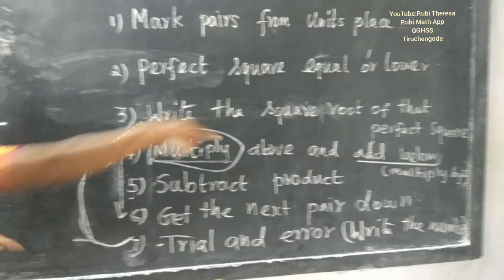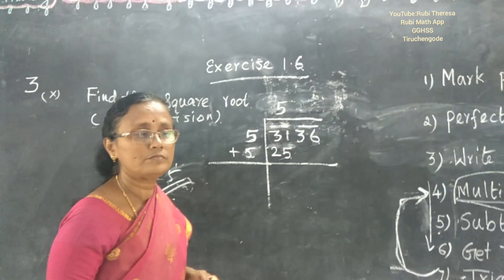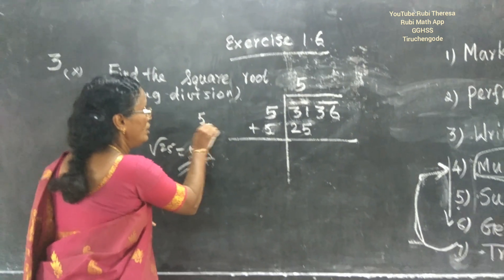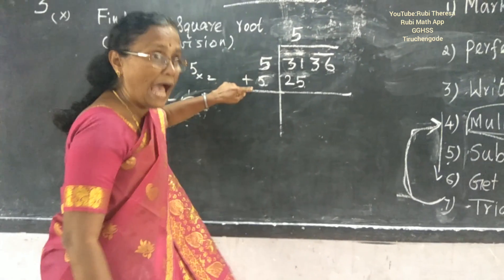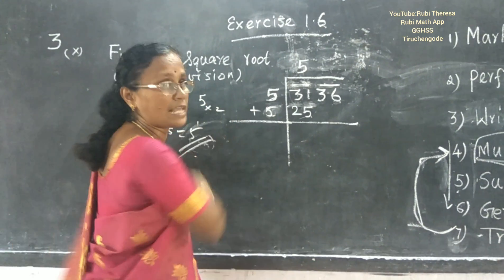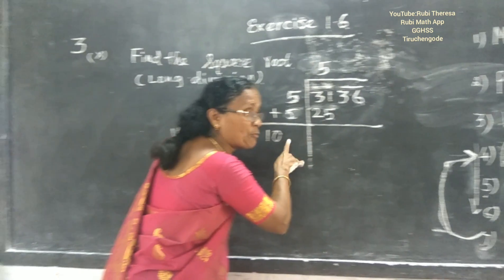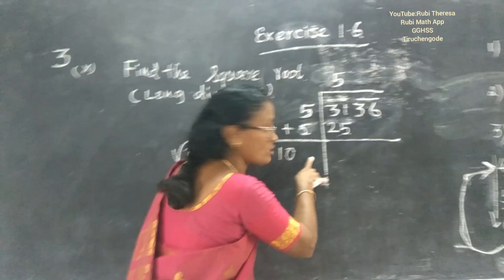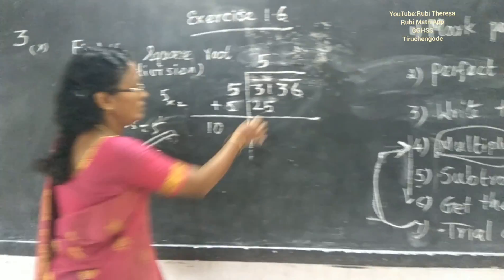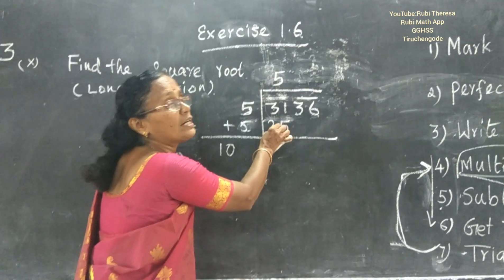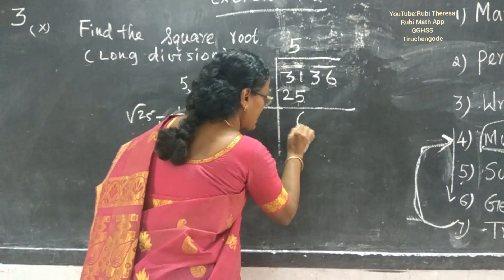Next step: add below — or instead of adding, you can multiply this number by 2. Both are the same. So 5 plus 5 equals 10. While writing, leave a little space here — don't write close to the line, leave a small gap. Then subtract the product: subtract 25 from 31. The answer is 6.